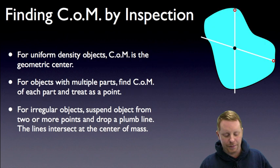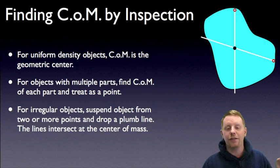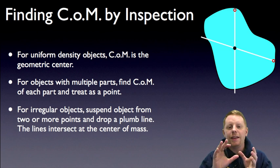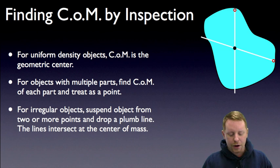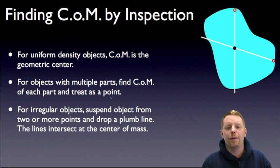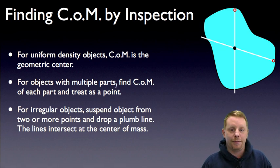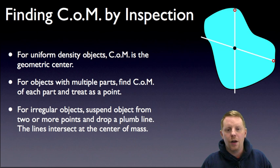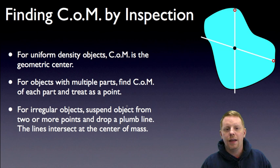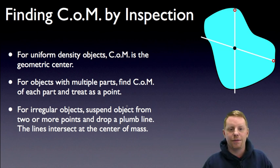So how do you find center of mass? For uniform density objects, center of mass is the geometric center — think of a sphere of uniform density; the center of mass is in the center of the sphere. For objects with multiple parts, find the center of mass of each part, treat those as a system of point particles, and find the center of mass of that system. For irregular objects, we can find the center of mass empirically: hang it from different points, drop a plumb line down the center, and where all these lines cross is your center of mass.